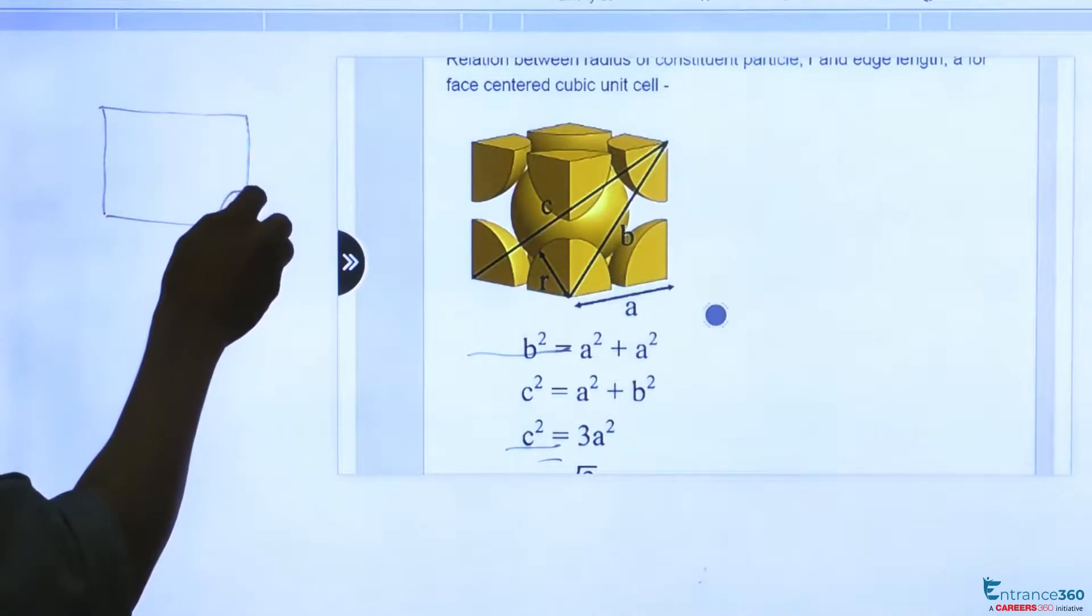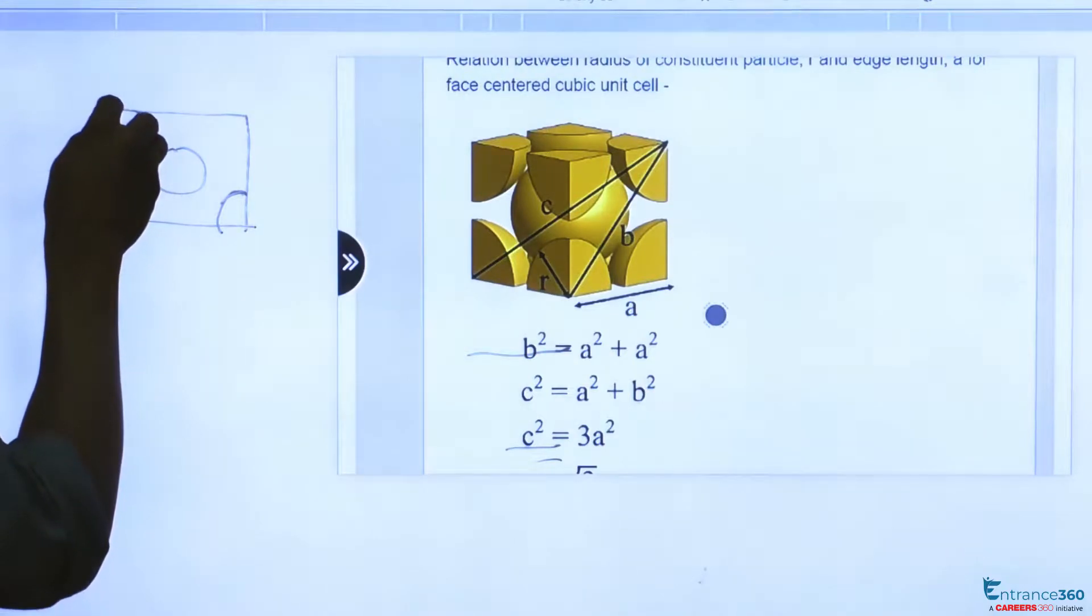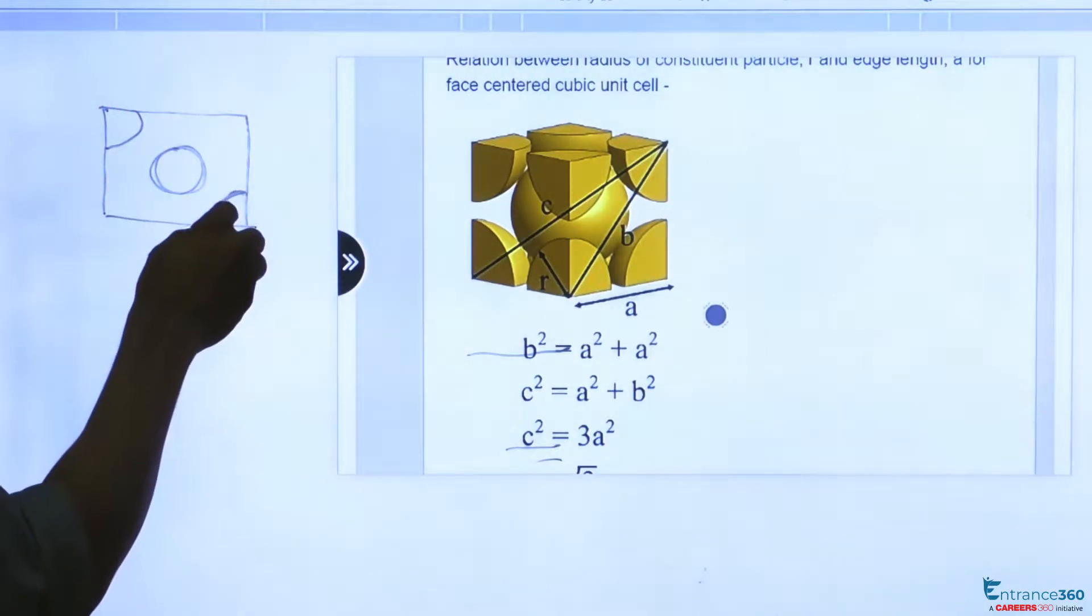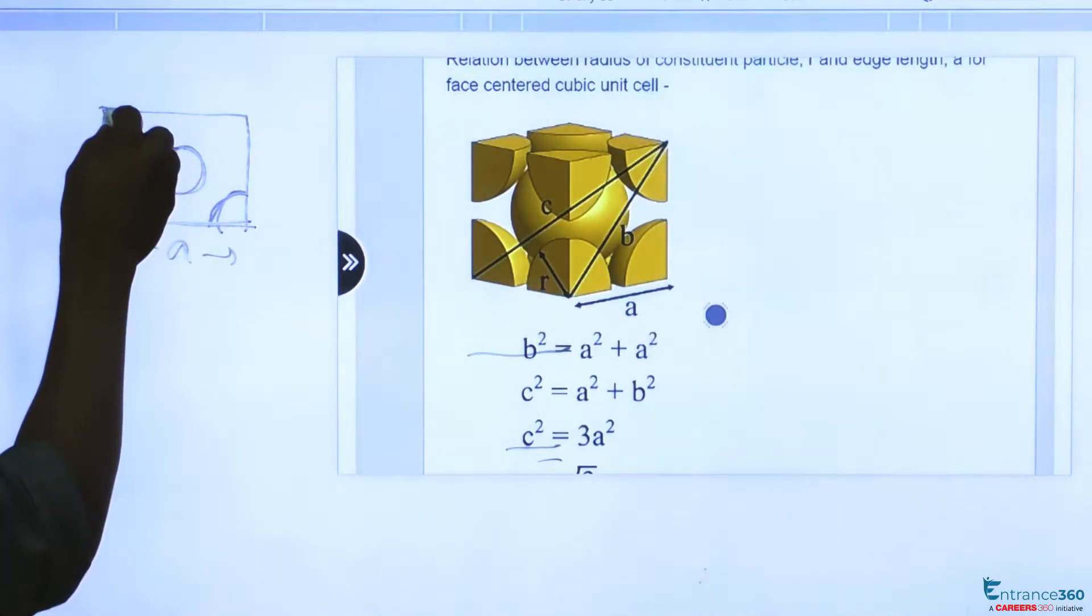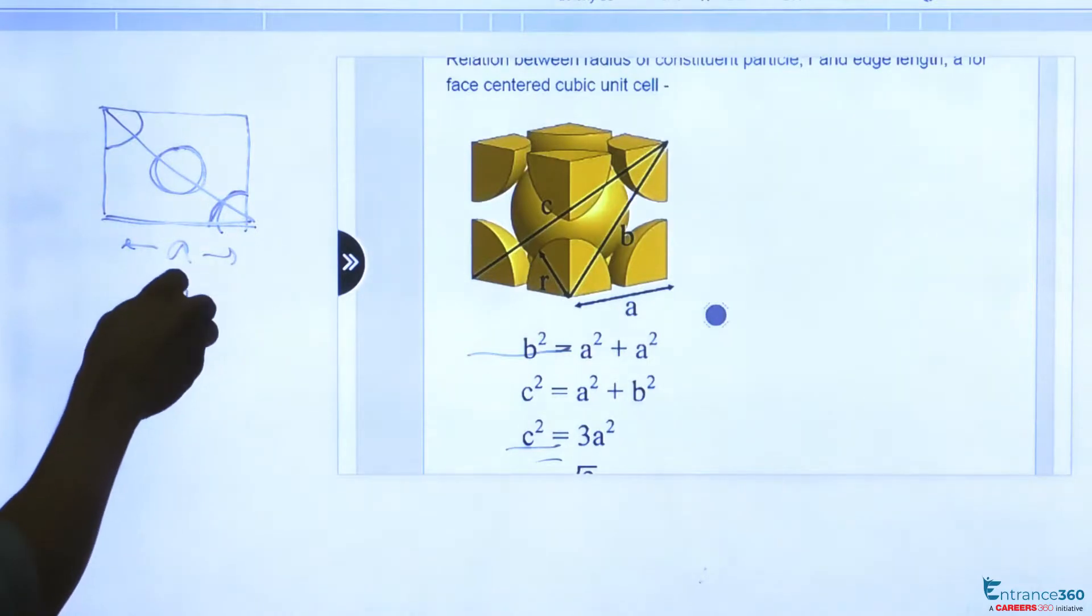So this is one atom, this is another atom, and this is a third atom. As we can see, this is the distance 'a', so this distance would be the hypotenuse of a triangle which has sides 'a' and 'a', so this would be √2a.